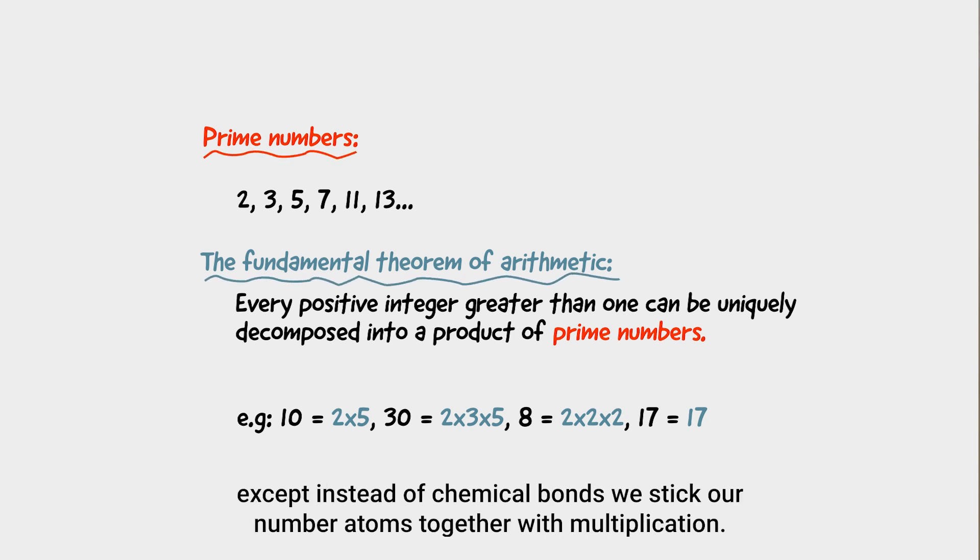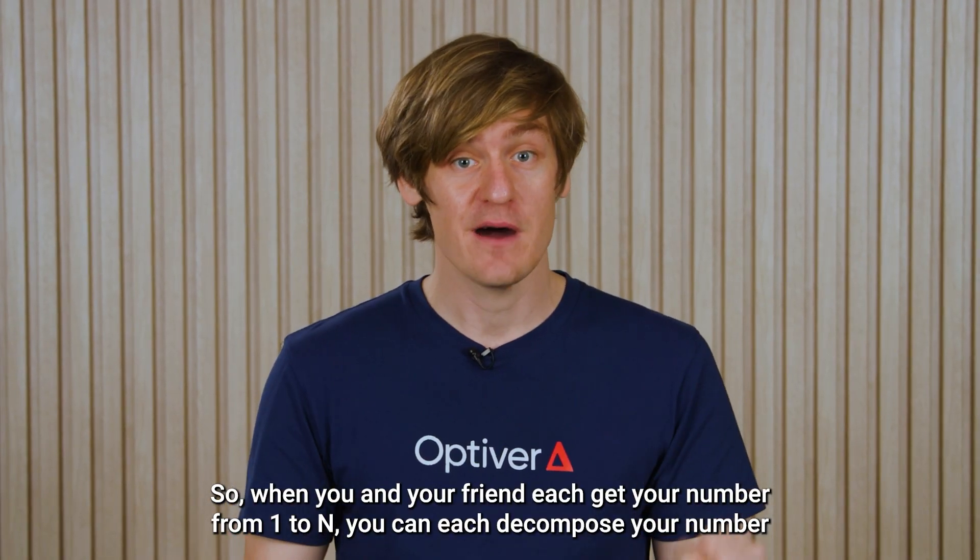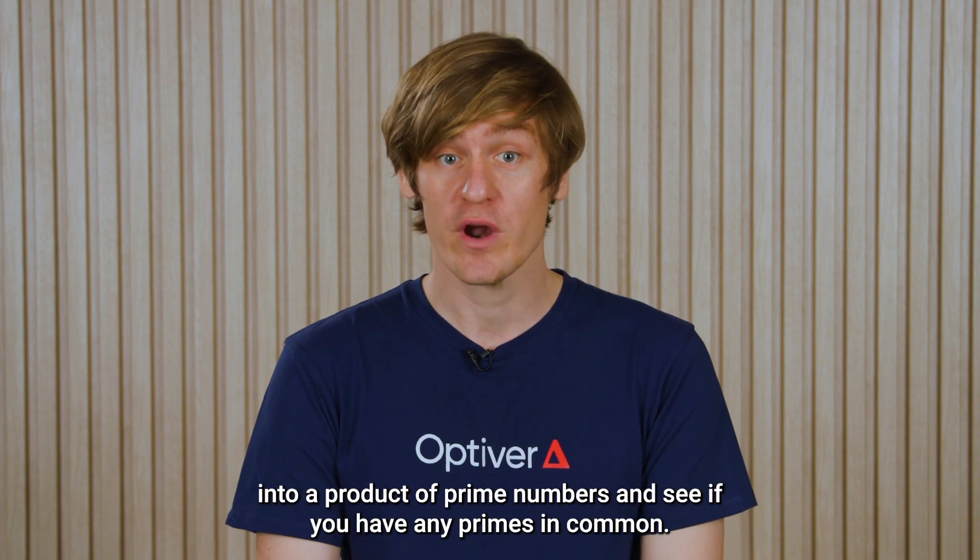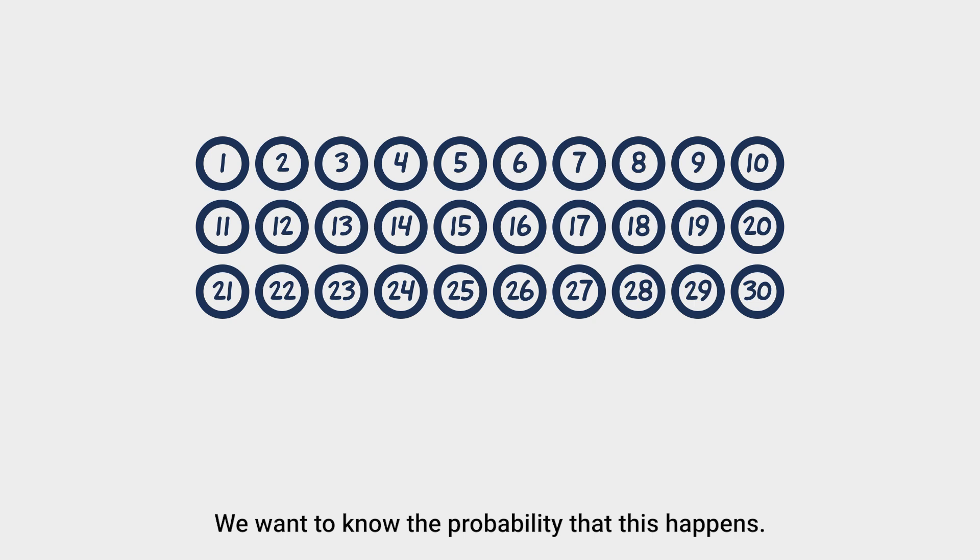Except, instead of chemical bonds, we stick our number atoms together with multiplication. So, when you and your friend each get your number from 1 to n, you can each decompose your number into a product of prime numbers and see if you have any primes in common. We want to know the probability that this happens.